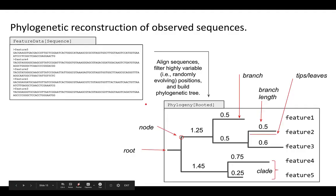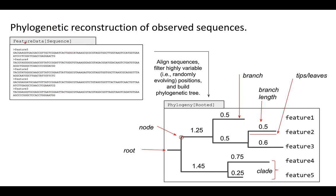De novo phylogenies: you import your sequence data — unaligned sequences grouped as the type 'FeatureData[Sequence]' — do a variety of intervening steps, and output a tree. We have the tree with tips where your taxa or features, exact sequence variants, or OTUs are located. You have branch lengths, which are indicative of substitution rates — how many substitutions occur in the DNA sequence. If you want to know the distance between feature 2 and feature 3, you sum the branch lengths: 0.6 plus 0.5 gives 1.1. That is the sequence distance between those two features.